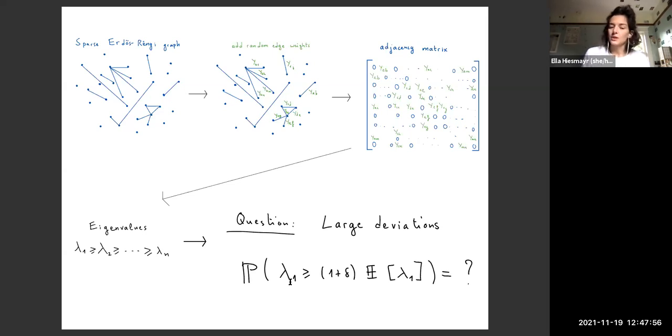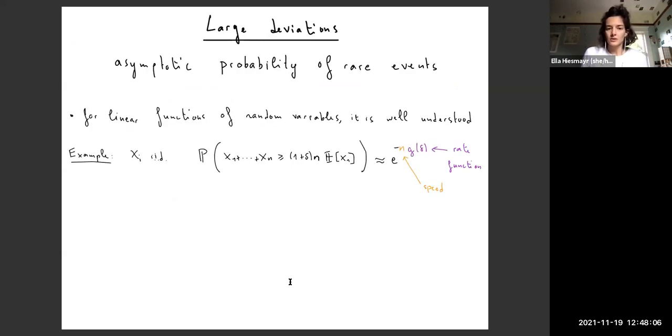What's the probability that the largest eigenvalue is larger than its expected value by a factor of one plus delta? You can similarly consider the lower tail, so the probability that it's atypically small. But for this talk, I will focus on the upper tail.